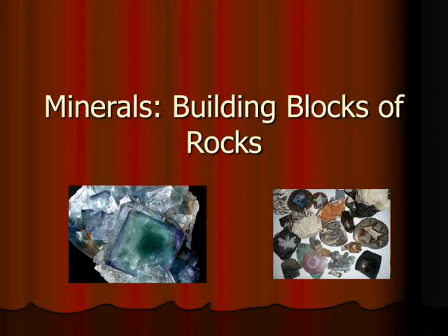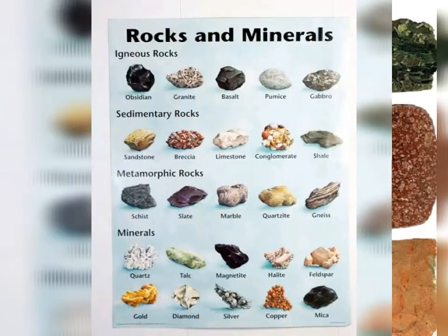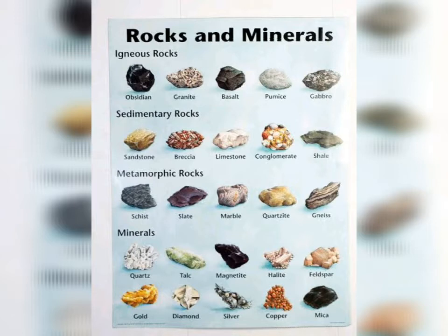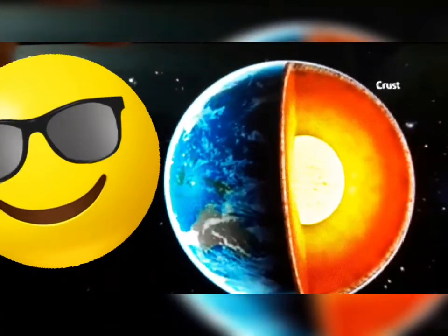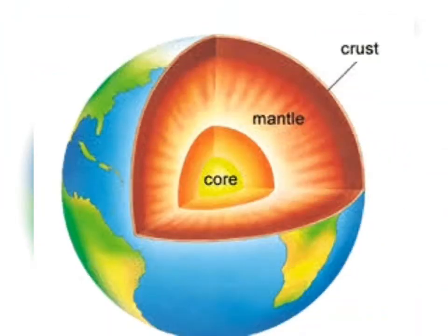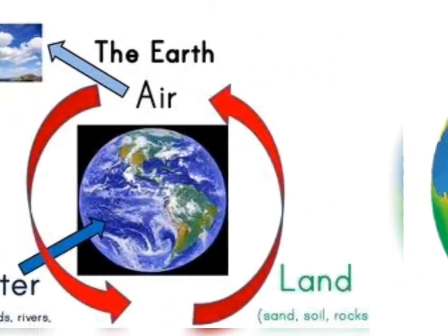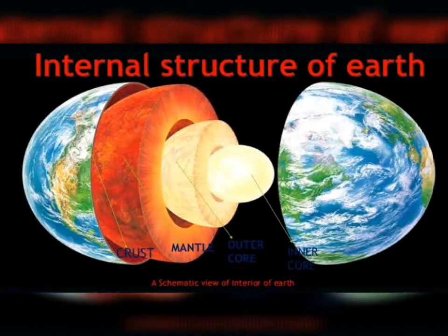Today we will discuss the different types of rocks. We get rocks very deep inside the Earth, that is the Earth's crust. Our Earth is divided into three layers: crust, mantle, and core — you can remember this as CMC. The crust is the layer where we live, where there are mountains, lands, oceans, rivers, and all living things.